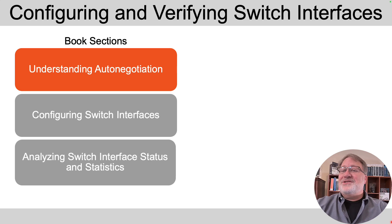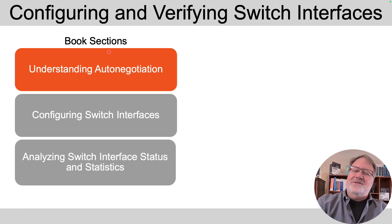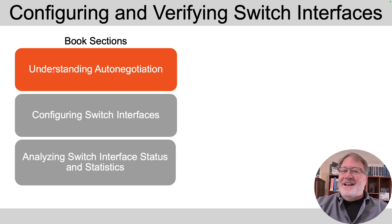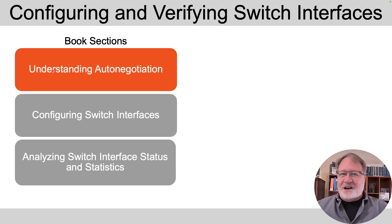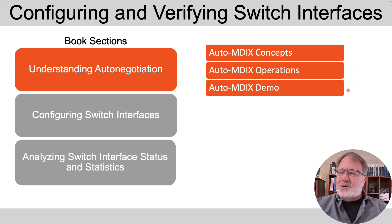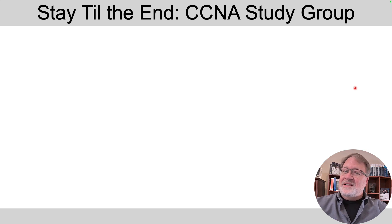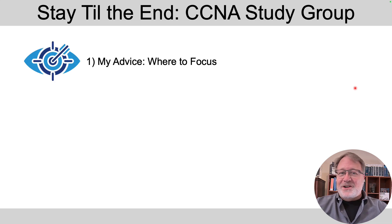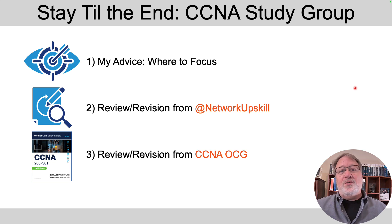This topic of AutoMDIX you'd find in my books in what's currently Chapter 7. In that chapter, you'd see a first section called Understanding Auto-Negotiation, and MDIX isn't that, but it's an automatic process that happens when the port comes up. We'll talk through what it does, the operations — how to config and verify the feature — and then I'll do a quick demo on real switches. At the end, I'll give advice about reviewing once you've finished the video.